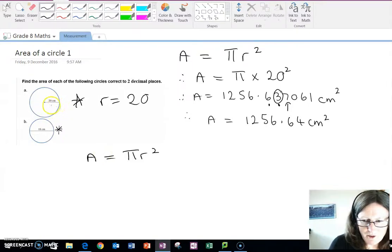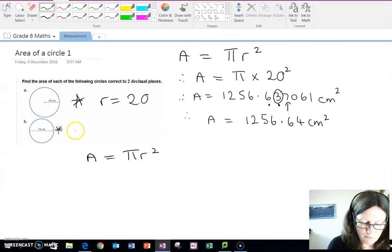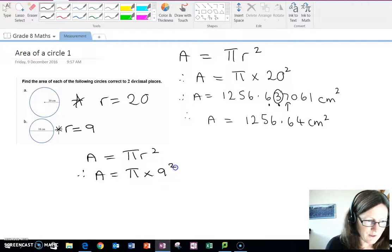Remember, the radius is halfway across, the diameter is all the way across. So if the diameter is 18, the radius would be half of 18, so the radius is 9. So we write area equals pi times by 9 squared.